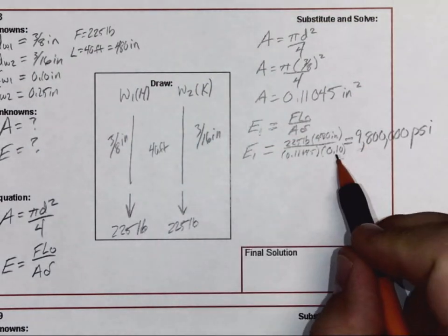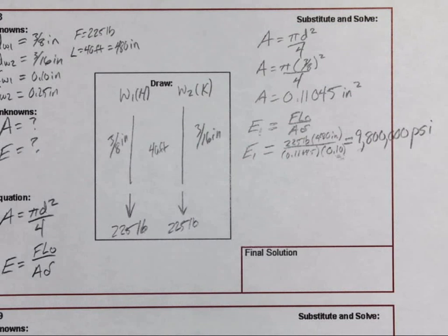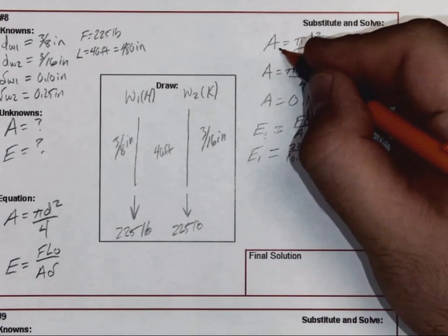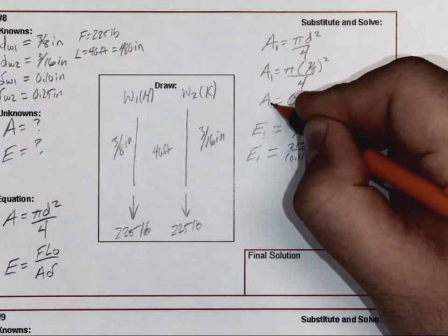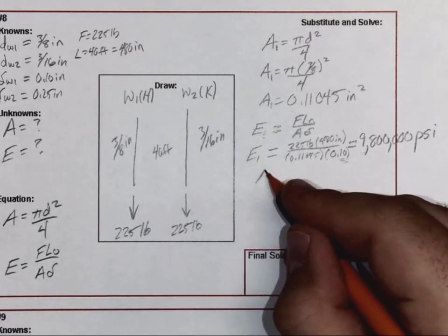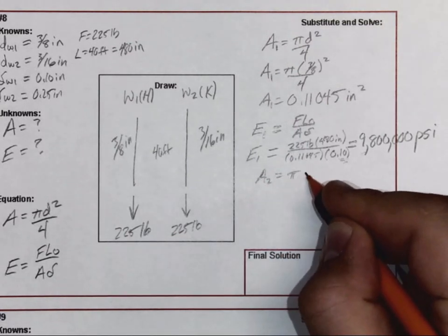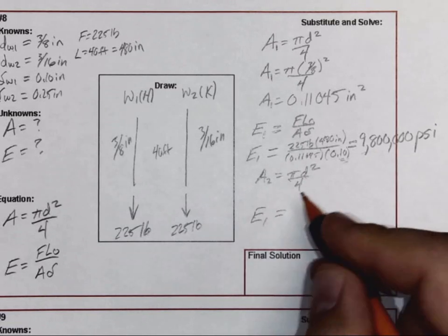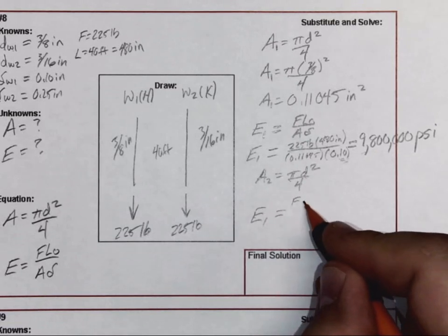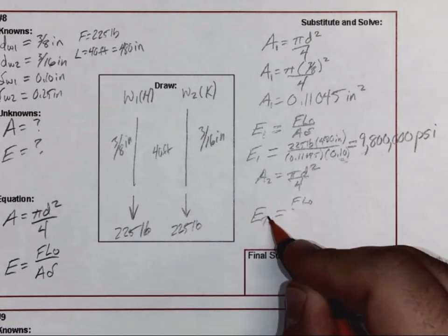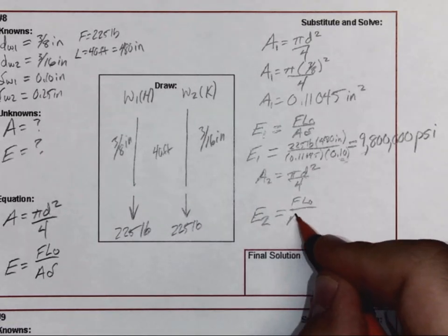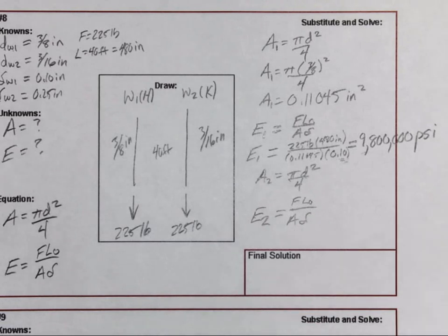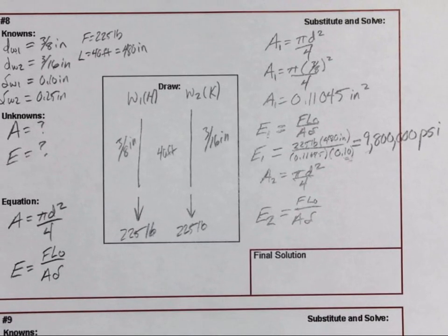So what I'm going to expect you to do is go ahead and do area one, and then I want you to go ahead and do the same kind of process for area two, and then you're going to find the modulus of elasticity for two. And then I want you to figure out which one has the greater modulus of elasticity, or which one is the stiffer material.